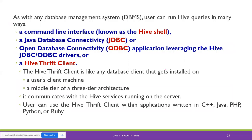As with any database management system, users can run Hive queries in many ways: a command line interface called Hive Shell; Java Database Connectivity, called JDBC; Open Database Connectivity, called ODBC; and the Hive Thrift Client. The Thrift server provides cross-language platform support. So overall, to insert and execute queries in Hive, you need a Hive Shell, an application interface like JDBC or ODBC, and a Hive Thrift Client.